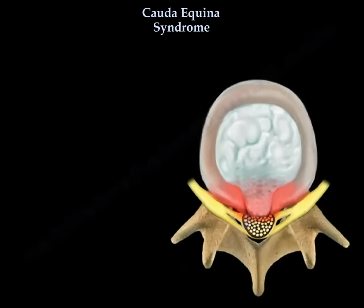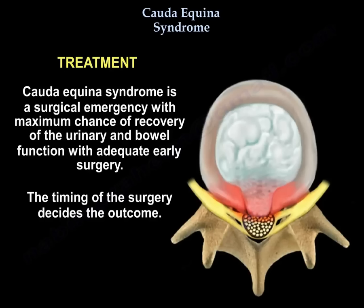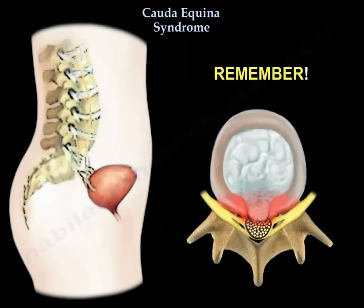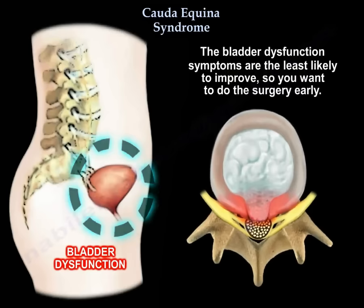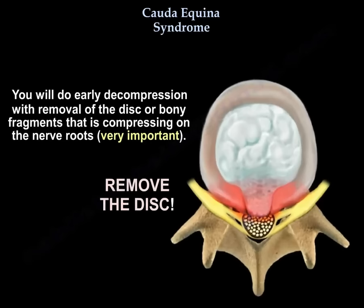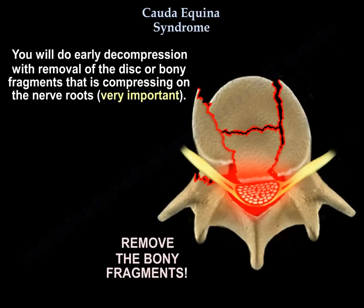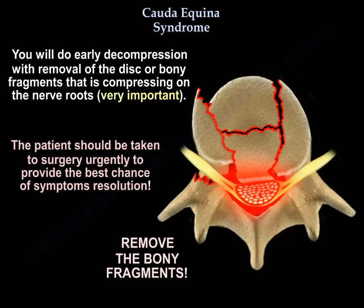Treatment is a surgical emergency, with the maximum chance of recovery of urinary and bowel function depending on adequate early surgery. Timing of surgery decides the outcome. Remember, bladder dysfunction symptoms are the least likely to improve, so you want to do the surgery early. Early decompression with removal of the disc or bony fragments compressing the nerve roots is critical. The patient should be taken to surgery urgently to provide the best chance of symptom resolution.